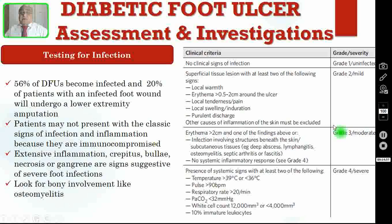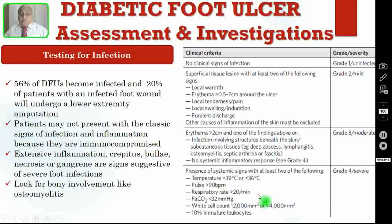Other causes of skin inflammation must be excluded. Grade 3 is moderate: erythema of more than 2 cm and infection involving structures beneath the skin, such as subcutaneous tissue, deep abscess, lymphangitis, osteomyelitis, septic arthritis or fasciitis, with no systemic inflammatory response. Grade 4 is severe infection: presence of systemic signs with at least two of the following — temperature more than 39°C or less than 36°C, pulse more than 90 beats per minute, respiratory rate more than 20 per minute, PaCO₂ less than 32 mmHg, white cell count more than 12,000 or less than 4,000, or more than 10% immature leukocytes in the differential count.